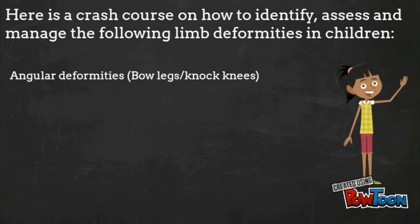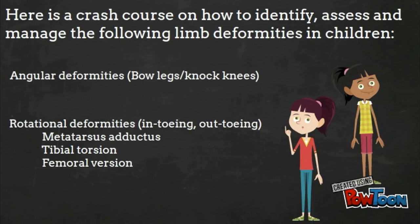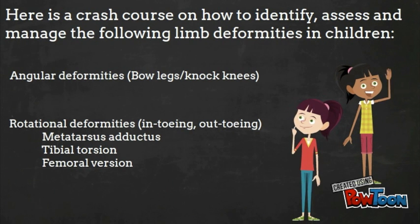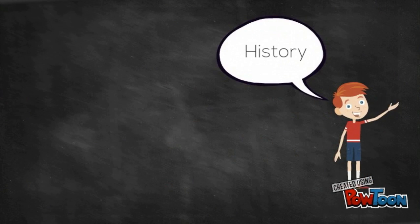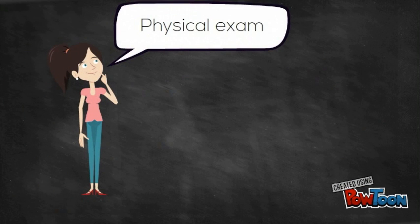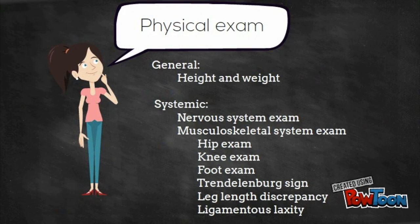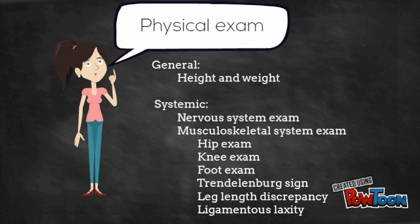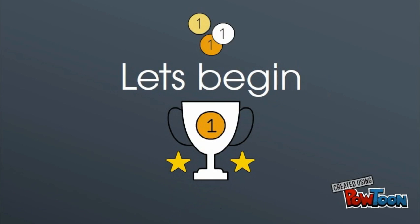Topics covered include angular deformities and rotational deformities. A careful history and physical examination is necessary to determine whether the complaint requires further evaluation. Do a general examination followed by a systemic examination of the nervous system and musculoskeletal system. Let's begin!